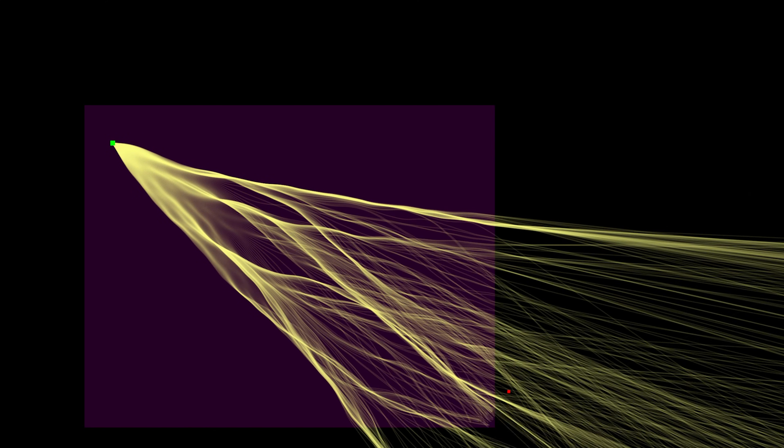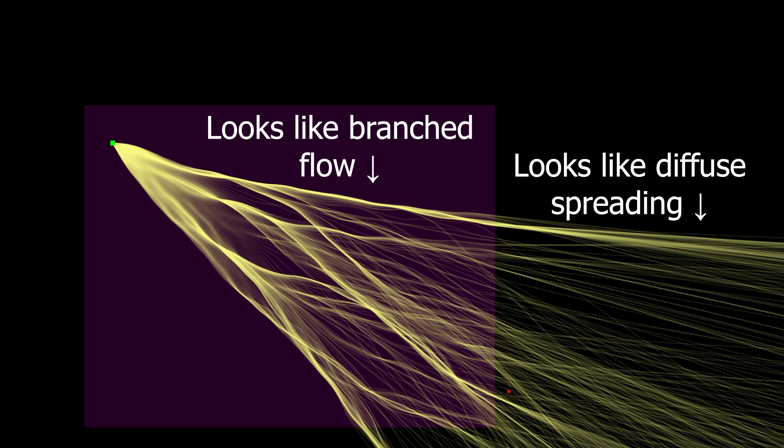However, despite how universal this phenomenon is, it was only recently discovered and even now is still barely touched on in modern physics compared to other fields. The reason for this is because it's easy to miss. If you zoom out far enough, branch flow just becomes diffuse waves spreading. You have to catch it at the right scale to notice it.